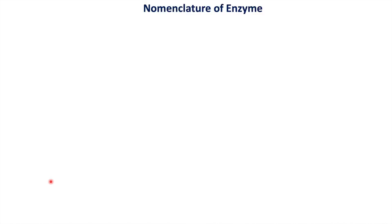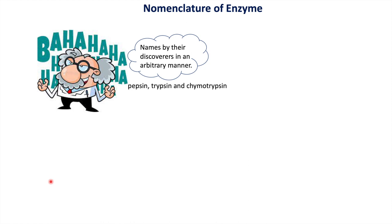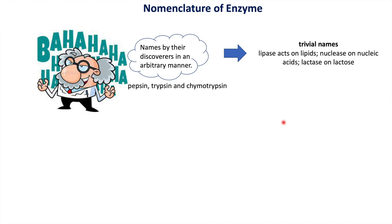When a coenzyme or metal ion is bound to the enzyme with a covalent bond, it is called a prosthetic group. Regarding nomenclature, earlier scientists named enzymes arbitrarily — for example, pepsin, trypsin, chymotrypsin — giving no information about their function or source. Later, trivial names were introduced, like lipase, where 'lip' refers to lipid and 'ase' represents enzyme, so lipase acts on lipid. Similarly, nuclease acts on nucleic acid and lactase acts on lactose.